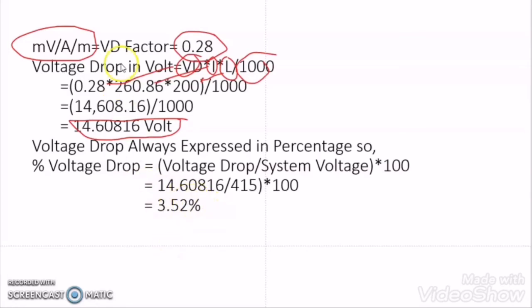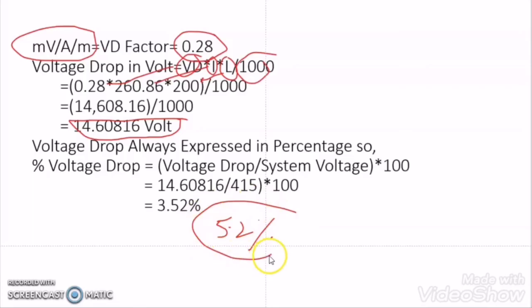Suppose after our calculation we find that the voltage drop percentage is coming to 5.2%. In that case we have to go for a higher cable size. The higher size above 185 mm² is 240 mm². Or, we have to go for 2 runs of a smaller cable, maybe 95 or 120 mm² — 2 runs of that cable — which will be another case.